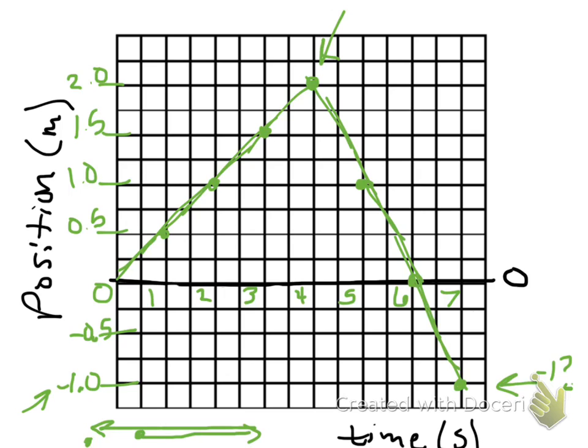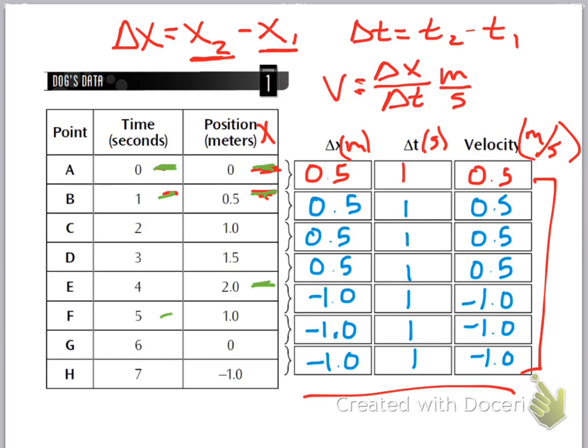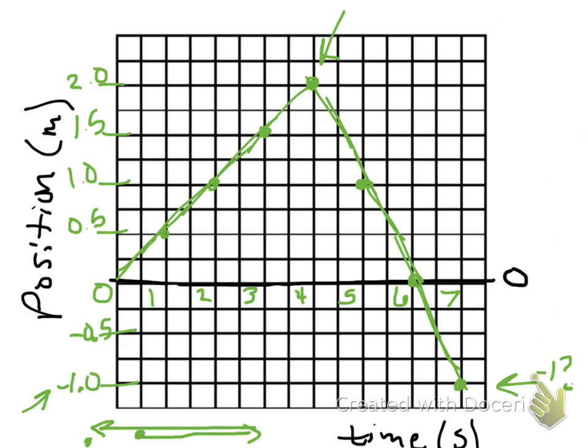He goes back much quicker. How do we know? We can take a look at our velocities — they have a bigger value. They're negative, and we'll talk about what that means in a second. But we have a bigger value: it's 1 rather than 0.5. So this is what our position versus time graph looks like for the dog.